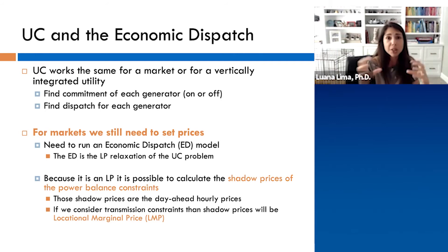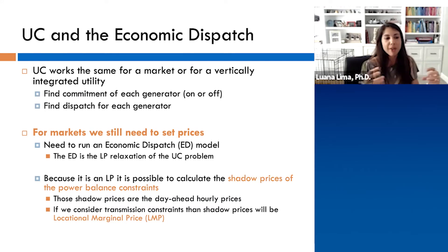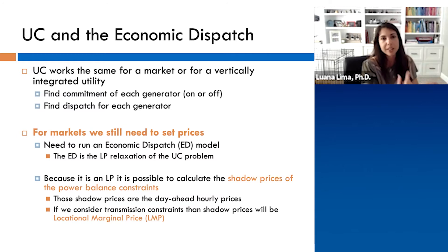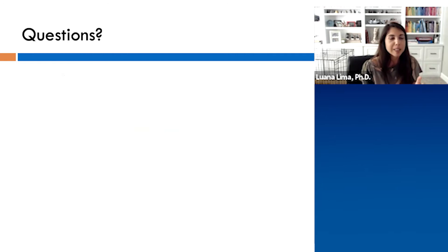This marginal cost is also called shadow prices. When you think about the constraints associated with the transmission system, we get what we call locational marginal price, or LMP. For each bus or zone of the system, we have exactly how much it costs to generate an additional megawatt at that zone. This is what is used as electricity prices in the market.